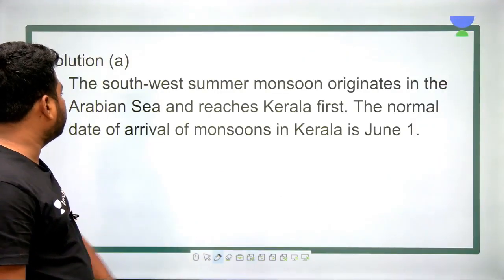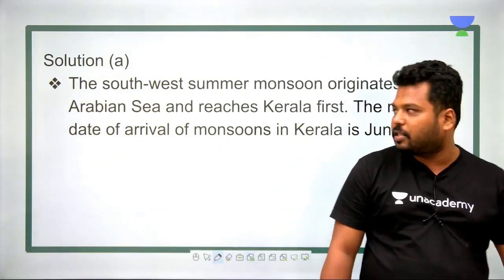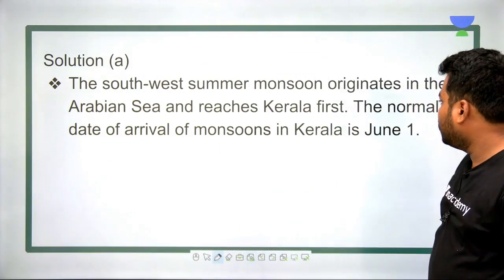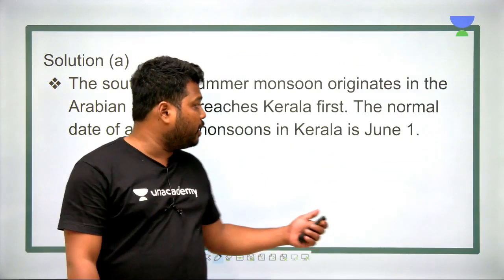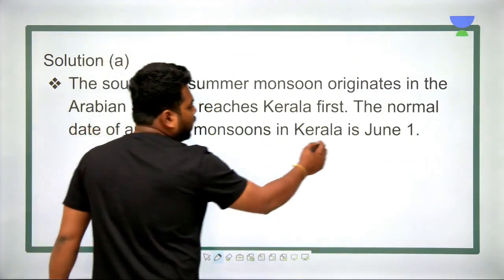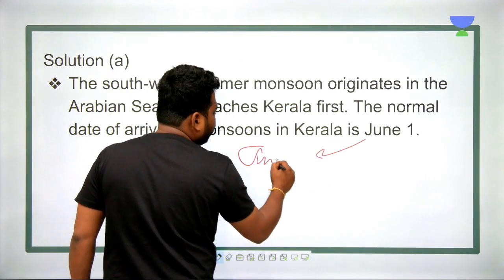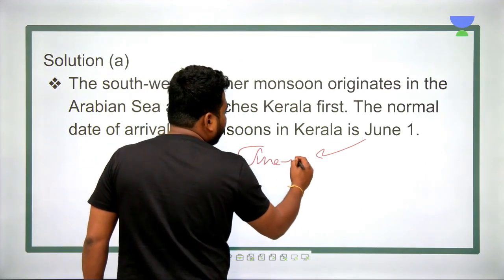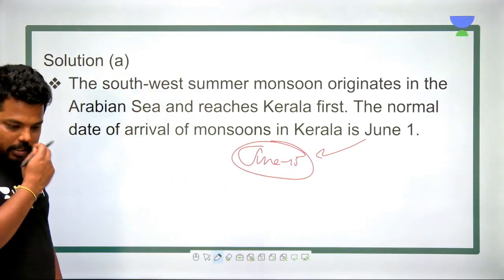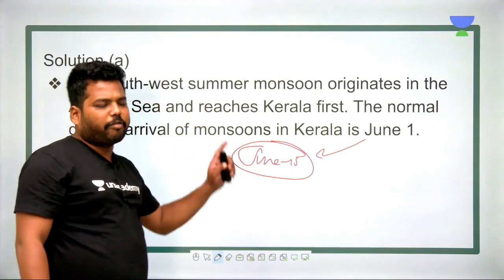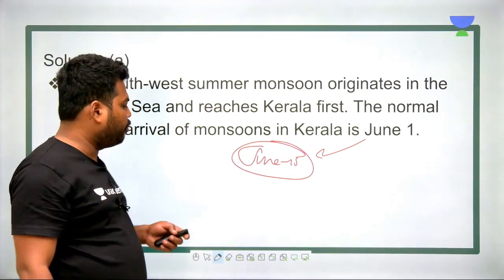The Southwest Monsoon originates in the Arabian Sea and reaches Kerala. The normal date of arrival is the first week of June, though it may vary up to June 15th depending on low-pressure conditions.